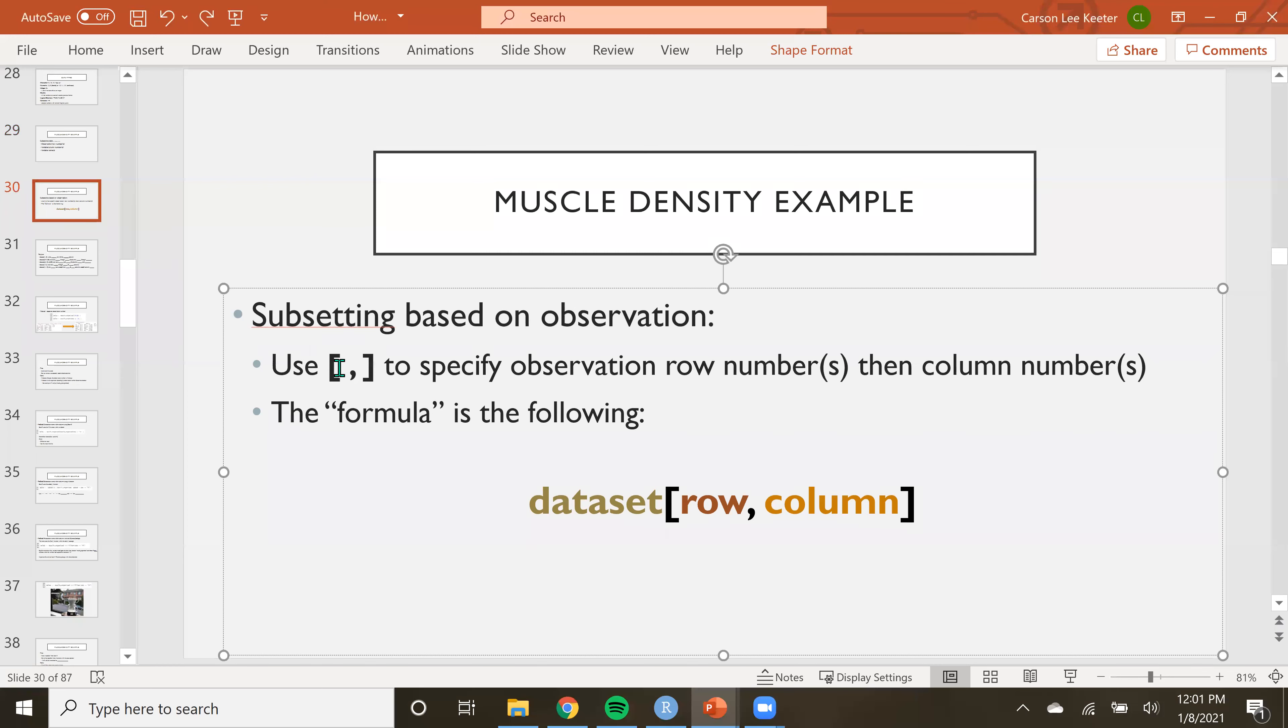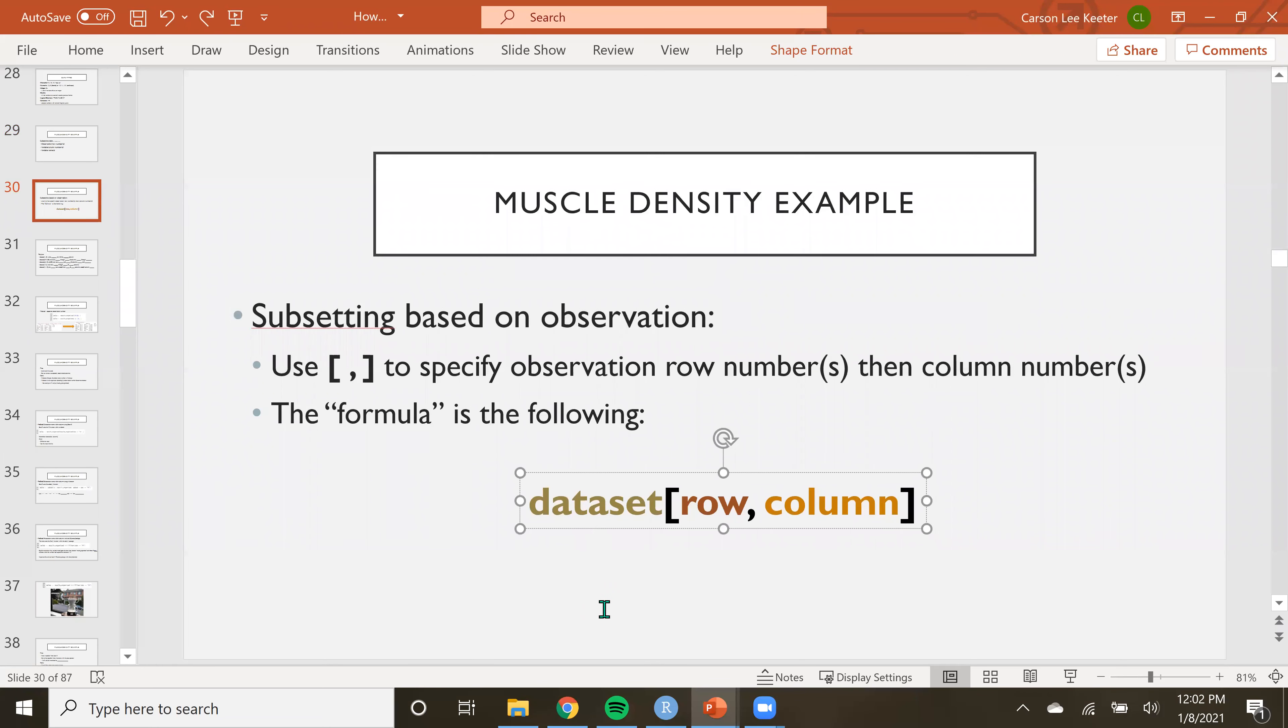Right. So in R, we use the square brackets, always the square brackets in R when we're specifying row numbers and column numbers. Where the first one is always the row number. And the second one is always the column number. So row, column, easy enough. And we just tack that on to whatever we have the data set called. And that's that.